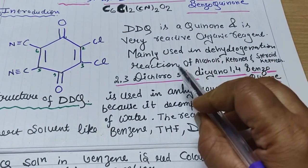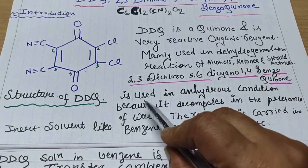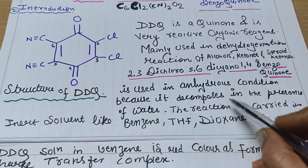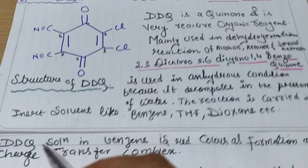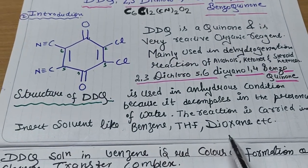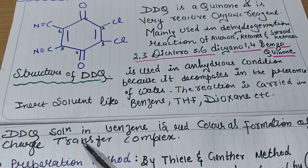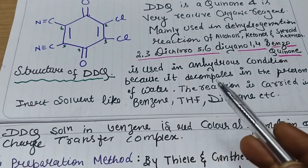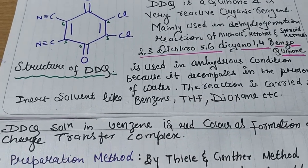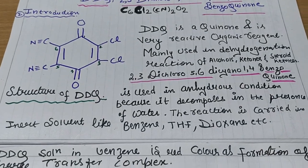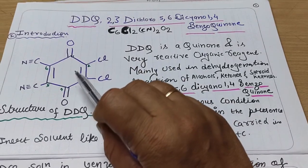DDQ is mainly used in dehydrogenation reactions of alcohols, ketones, steroids, etc. It is used in anhydrous conditions because it decomposes in the presence of water. The reaction is carried out in inert solvents like benzene, tetrahydrofuran, dioxane, etc. When dissolved in benzene, DDQ gives a red color due to the formation of charge transfer complexes.